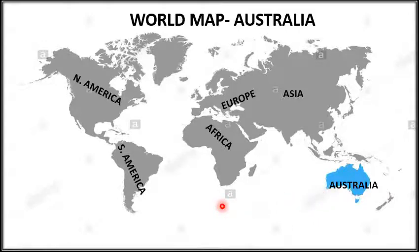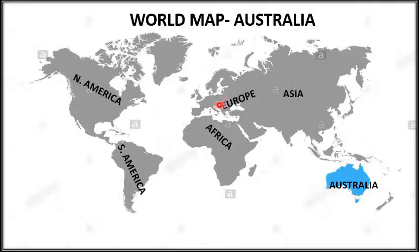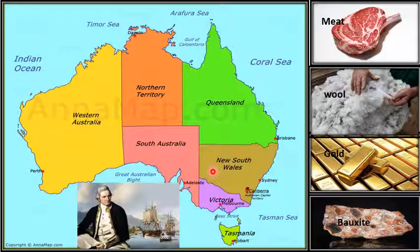Australia comprises the mainland and the island of Tasmania, and several small islands in the Indian Ocean and also in the Pacific Ocean. Australia is an isolated land, meaning the land is separated from the rest of the world. Because of this isolation, it has unique animals and plants.